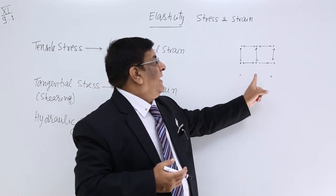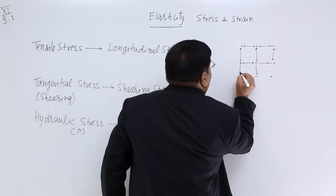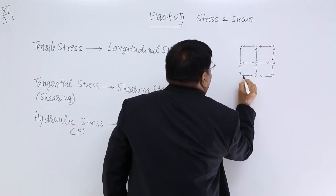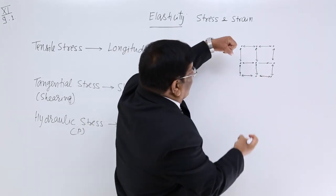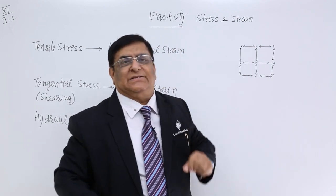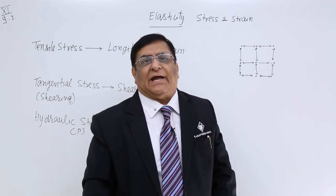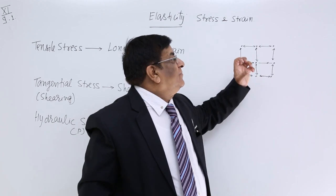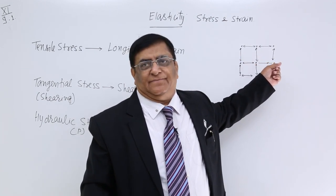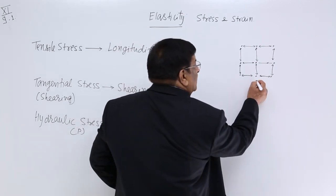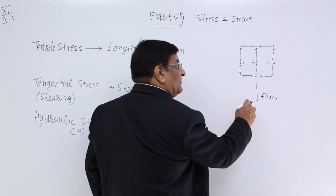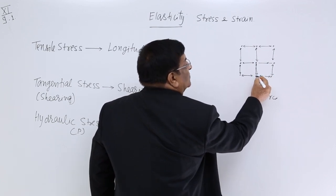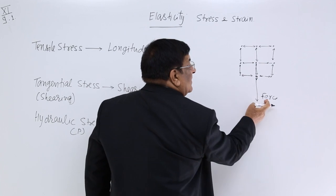Now, if we apply an external force on it, this distance will try to change. If we pull it, this distance will increase. When the distance increases, we have seen in nature that it reacts, and within itself it develops a force to come back to its original position. That means if I apply a force in this direction and the distance has increased, it will try to go back to its position and oppose my force.